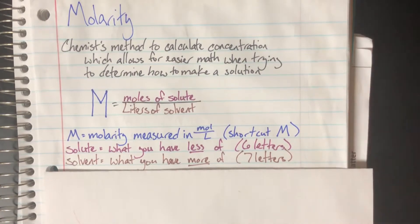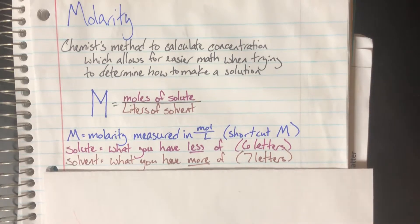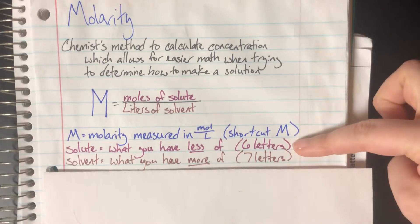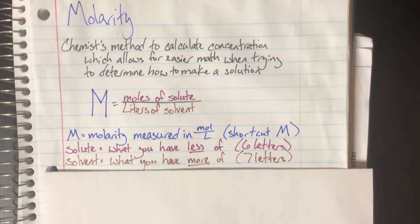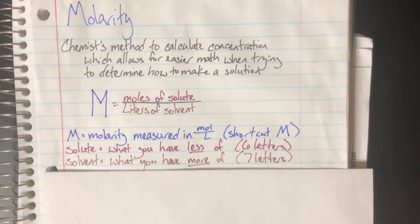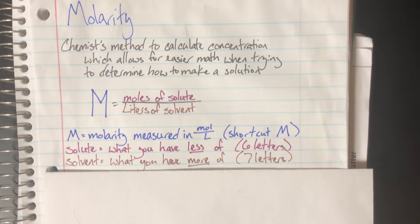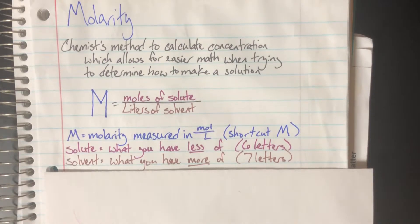Solute is whatever you have less of—it's generally the thing getting dissolved into the liquid. Here's how I remember it: the word 'solute' is slightly shorter than 'solvent,' and I have less solute. Solvent has one more letter, and I have more of it. Solute is generally measured in grams or moles and is what I'm dissolving into the solvent. Normally the solvent is water.